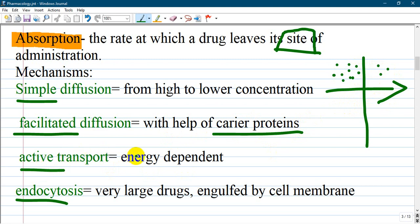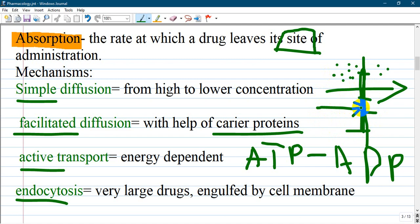Third one is active transport, which is energy dependent and uses ATP undergoing hydrolysis. And endocytosis for very large drugs that are engulfed by cell membrane. They are of very large size and can get transported only through this way without changing form. They don't fit well in pores or pumps or other mechanisms. They are engulfed and covered by cell membrane.